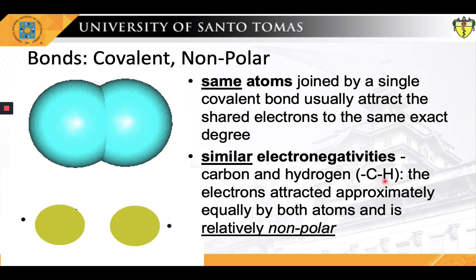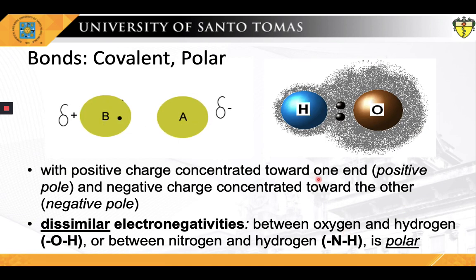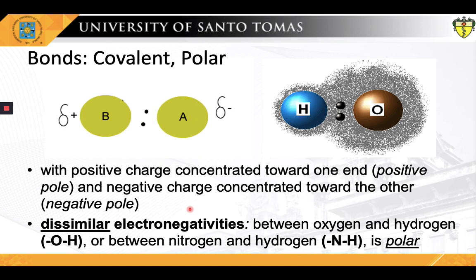Both carbon and hydrogen atoms have similar electronegativities and thus attract the shared electrons almost equally. On the other hand, when the atoms joined by a covalent bond have dissimilar electronegativities, the two atoms attract the shared electrons to different degrees, giving rise to a polar group or molecule. A polar structure is one with positive charge concentrated toward one end (the positive pole) and negative charge toward the other (the negative pole). Compared with carbon, oxygen and nitrogen attract electrons relatively strongly, whereas hydrogen attracts electrons more weakly — covalent bonds with unequally shared electrons are therefore known as polar covalent bonds.